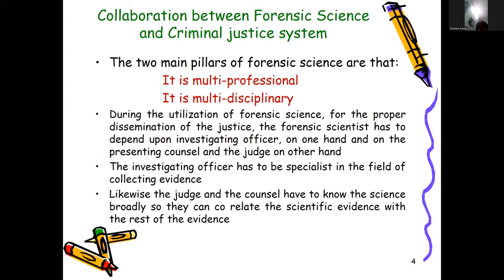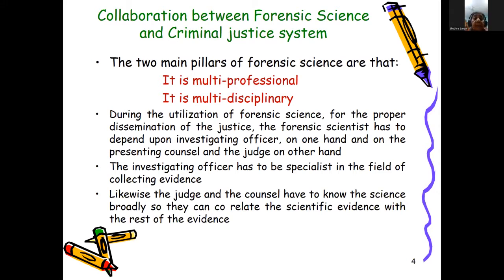During the utilization of forensic science for the proper administration of justice, the forensic scientist has to depend upon the investigating officer on one hand, and on the presenting counsel and the judge on the other hand. The forensic scientist is the main chain between the investigating officer and the criminal justice system. The judge and counsel have to know the science broadly so they can correlate the scientific evidence with the rest of the evidence.